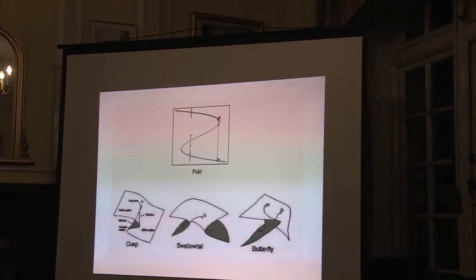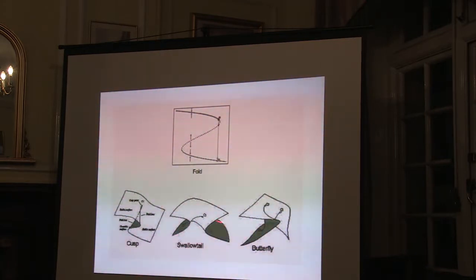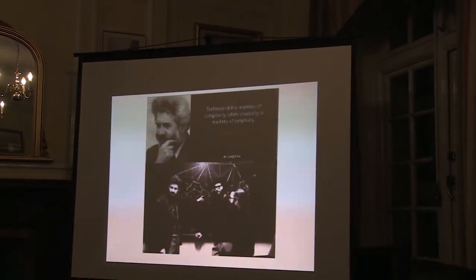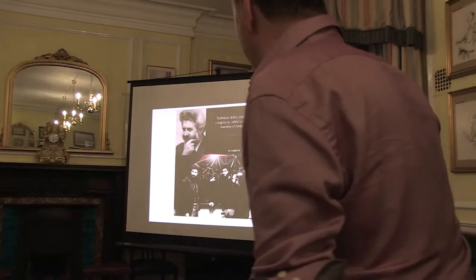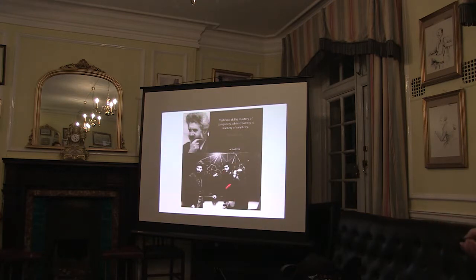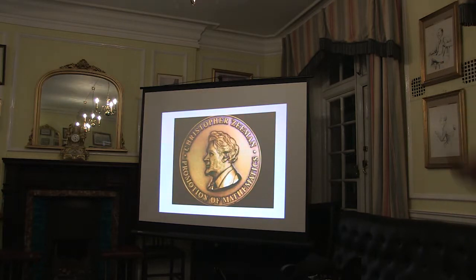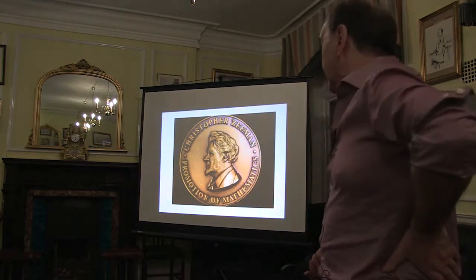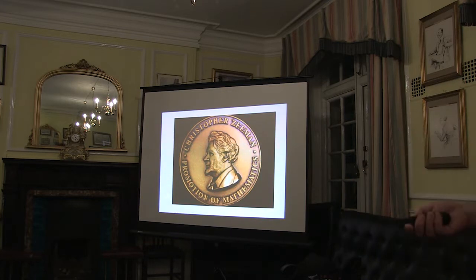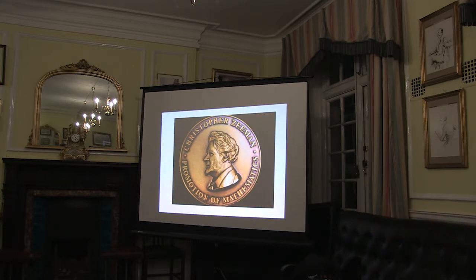Zeeman got very interested in the cusp catastrophe. The other two of the four one-variable catastrophes have the names swallowtail and butterfly. Here's a picture of Zeeman — very 1970s — teaching and demonstrating by pointing at the board. The Institute of Mathematics has a medal given every year for promotion of mathematics, so who knows, I might even get one for this talk. And here's the Christmas lecture.